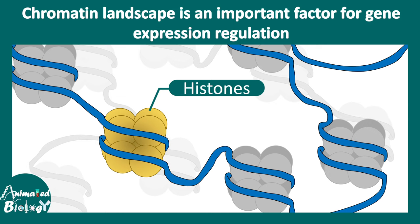Chromatin is made up of nucleosomes, and these nucleosomes have histones and DNA as their components. DNA is wrapped around the nucleosome, and the accessibility of the DNA depends on how tightly it is wrapping the histone. If it is too tight, accessibility of the DNA would be low, and if it is loose, many other proteins can actually interact with the DNA.